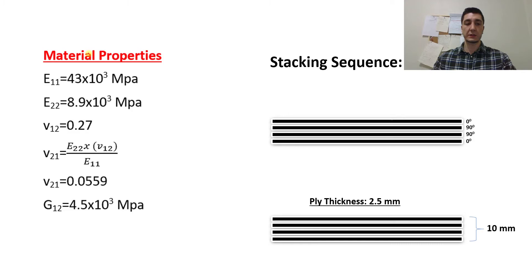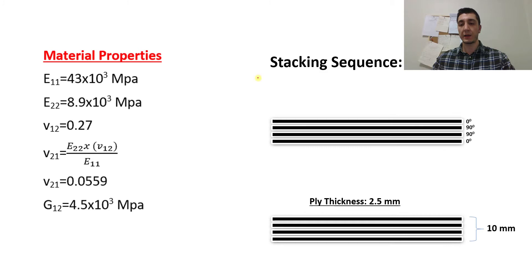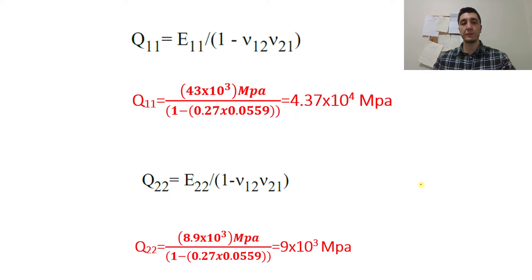So let's continue with the material properties. Composite materials have different material properties in different directions. We have elastic modulus in the 1-1 direction, elastic modulus in the 2-2 direction, and Poisson ratio in the 1-2 direction shown here as 0.27. We will also calculate the Poisson ratio in the 2-1 direction. We have the shear modulus G-1-2 in the 1-2 direction. We have 4 plies in the laminated composite plate with a stacking sequence of 0-90-90-0, each ply is 2.5 mm thick, giving a total plate thickness of 10 mm.